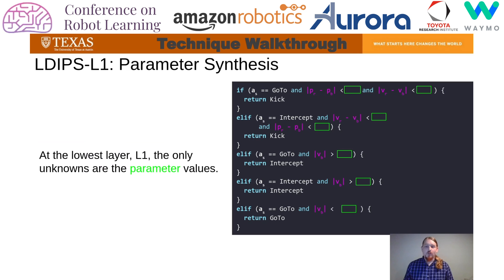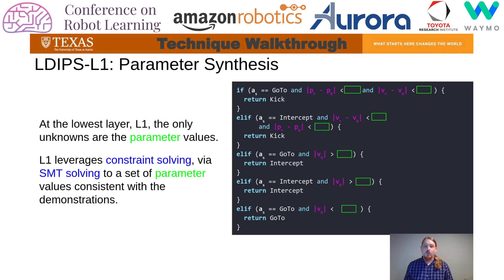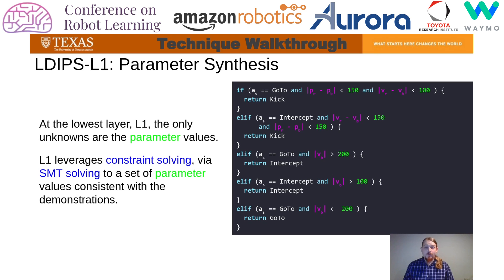At the bottom layer, or layer 1, LDIPS considers only parameter unknowns, and the goal is to find real-valued assignments to these blanks that are consistent with the demonstrations. To accomplish this, layer 1 models the program and demonstrations as an SMT formula, the solution to which is satisfying parameter values to complete the program. If a satisfying solution is found for a candidate, LDIPS returns it; otherwise, iteration continues at the upper layers.